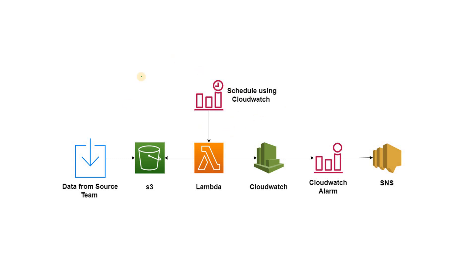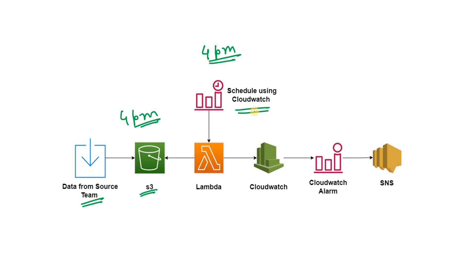The architecture is very simple. On the left-hand side we have our source team who agreed to send data to S3 by 4 PM. We need to inspect whether the data is coming on time or not. At 4 PM we will run one Lambda code. The Lambda needs to be scheduled, so we will use the scheduling capability of CloudWatch or EventBridge. Using a CloudWatch cron expression or rate expression we will trigger our Lambda code at 4 PM. Then this Lambda will go to that S3 bucket and try to search the latest partition to check whether data is available or not.